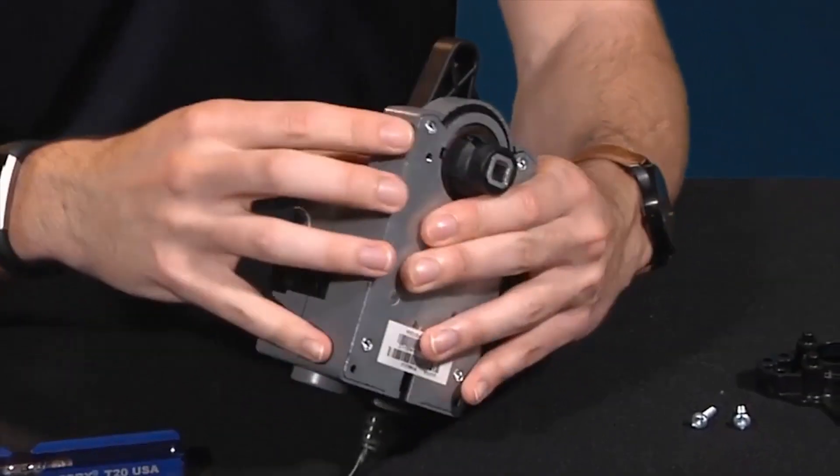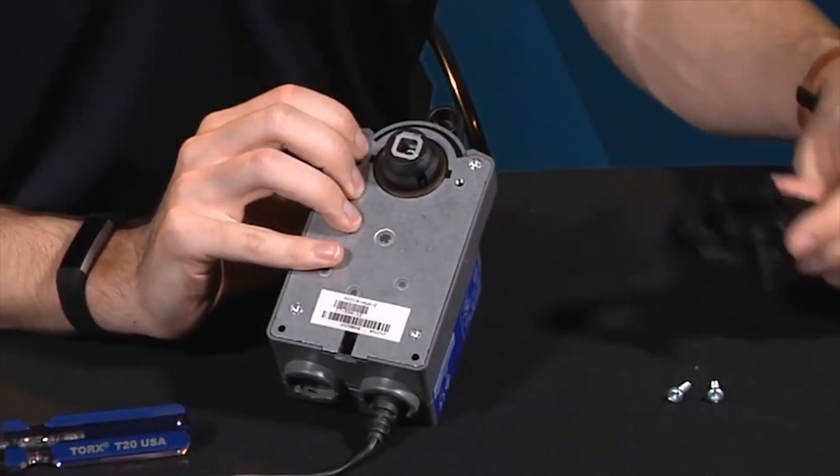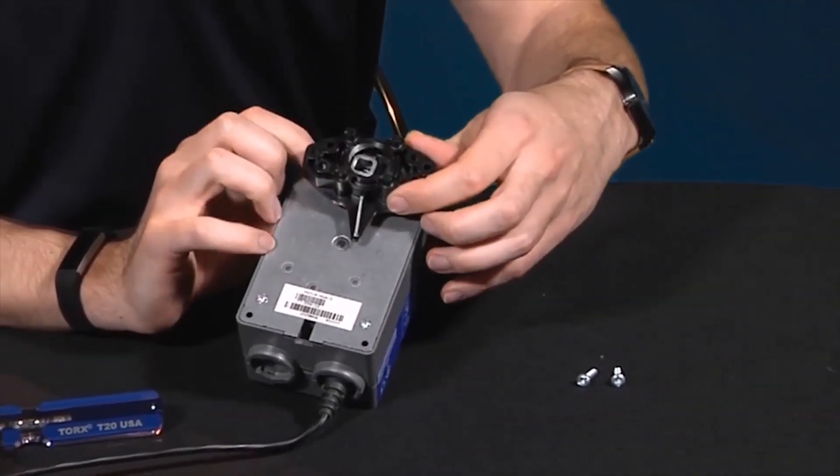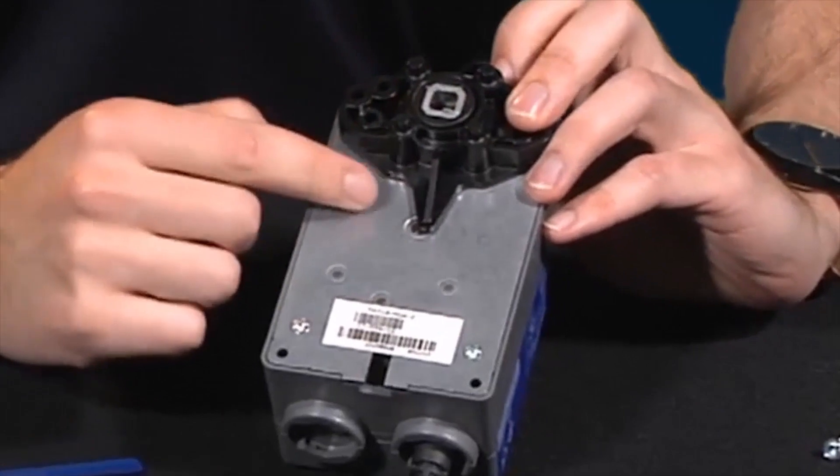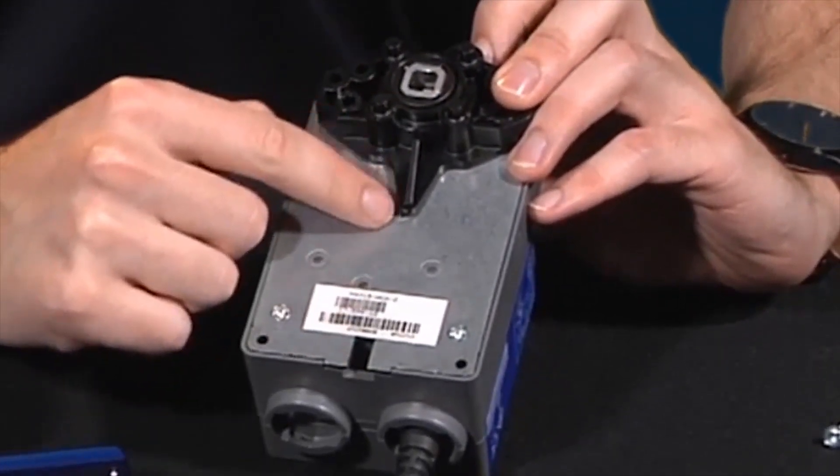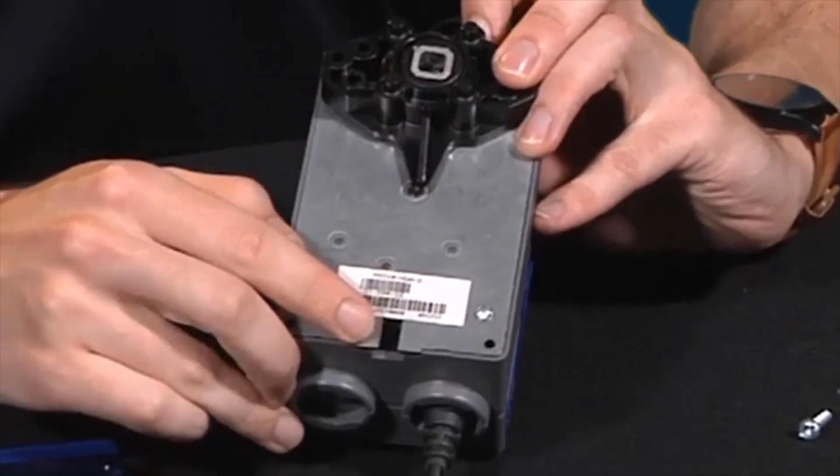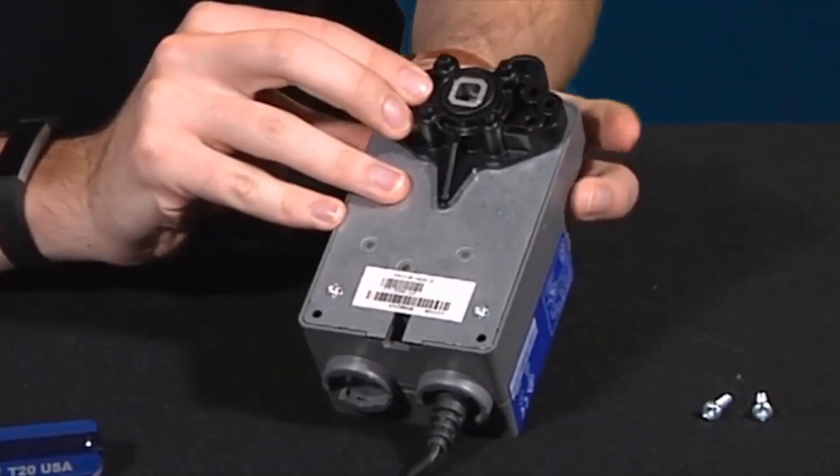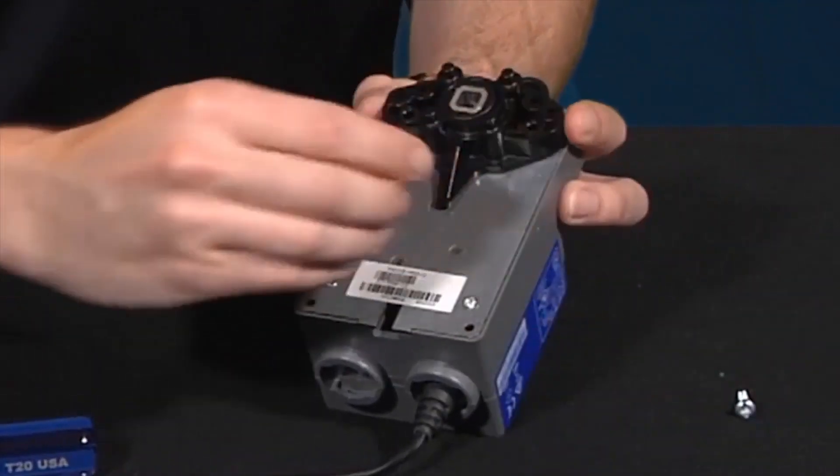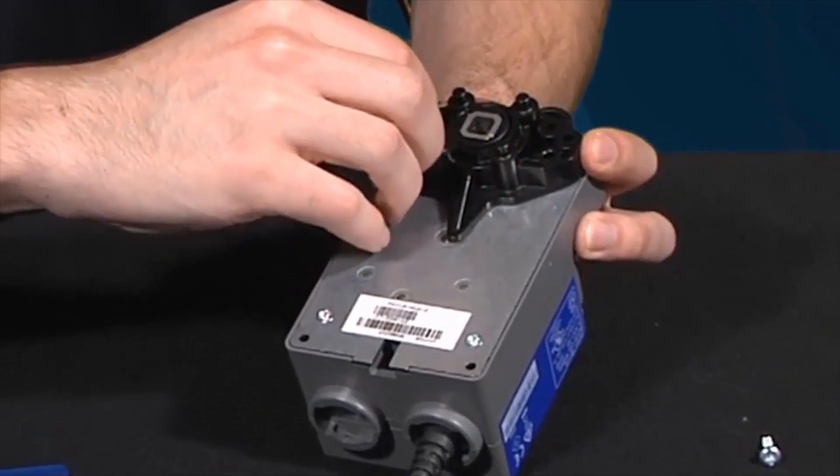Next, we'll be connecting the new linkage to the bottom of the actuator. The pointy side of the linkage will face down towards the anti-rotation slot on the actuator. After sliding the new linkage over the shaft of the kit, we'll be securing it with two screws using the T20 Torx driver.